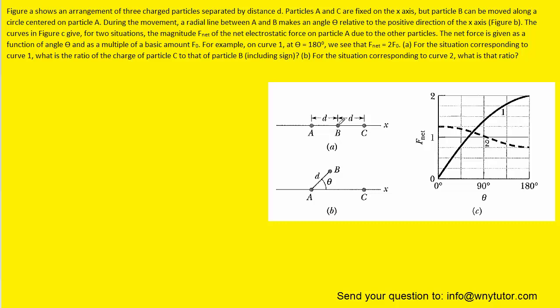For part A, we're going to leave particle B where it originally was started. Even though it can rotate around a circular path, we're just going to leave it where it is. That corresponds to an angle of zero degrees. If we look at the graph at zero degrees, the net force acting on particle A is also zero, which we can write off on the side.